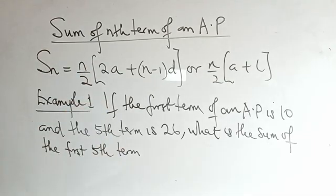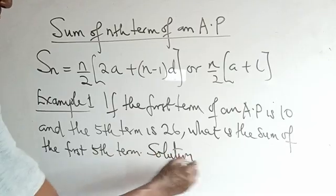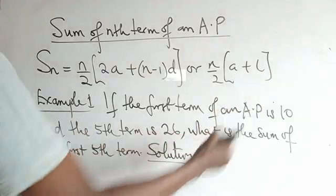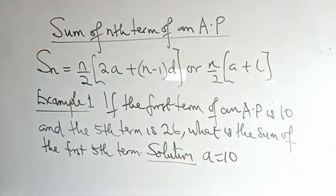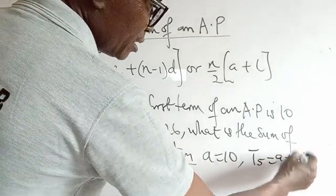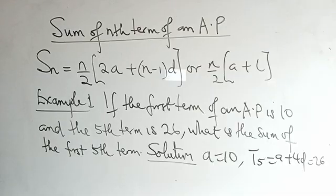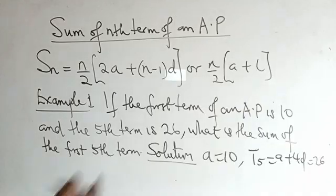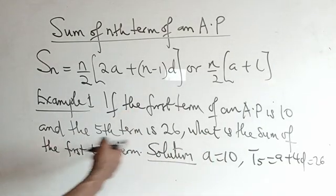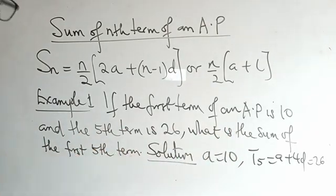Now we are given this — it is very, very simple. The moment you are able to state the formula, you get it right quickly. The first term a is 10, and the fifth term T5 = a + 4d = 26. Now, looking at it holistically, you will see which formula to use. Our a has been given, and the last term is the fifth term, because we are asked to find the sum of the first five terms.